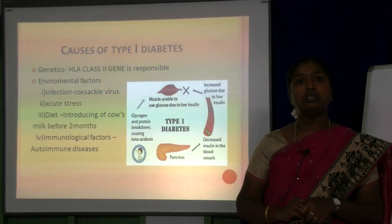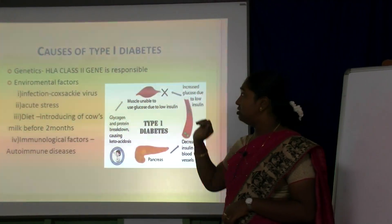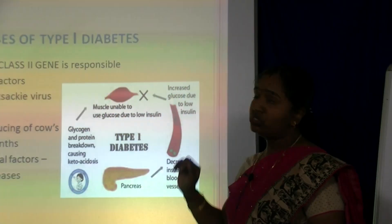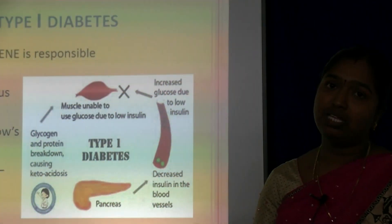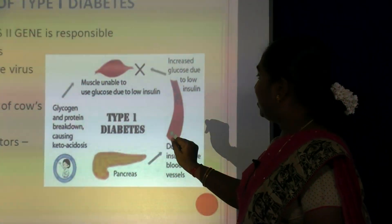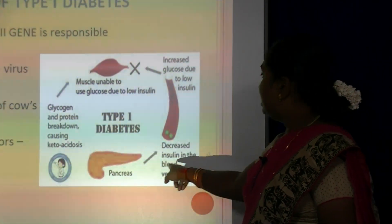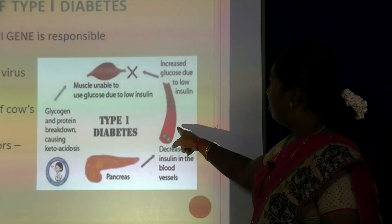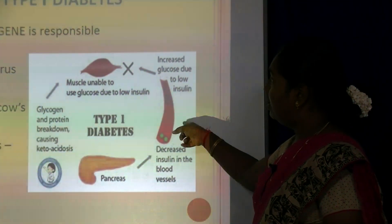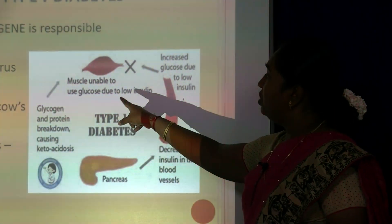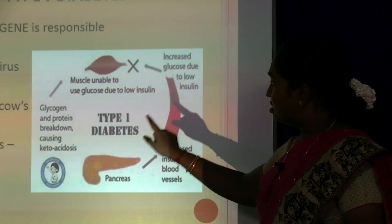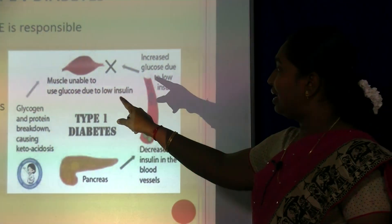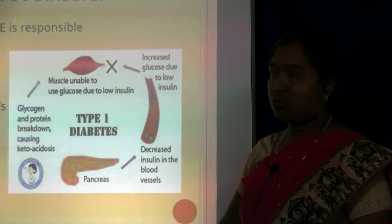The causes of Type 1 diabetes involve two main factors: genetic and environmental. The genetic factor is the HLA class 2 gene, responsible for Type 1 diabetes. The pancreas is unable to produce insulin, leading to decreased insulin production and increased glucose in the blood. The muscle is unable to use glucose due to low insulin. Furthermore, glucose, glycogen and protein breakdown causes ketoacidosis.